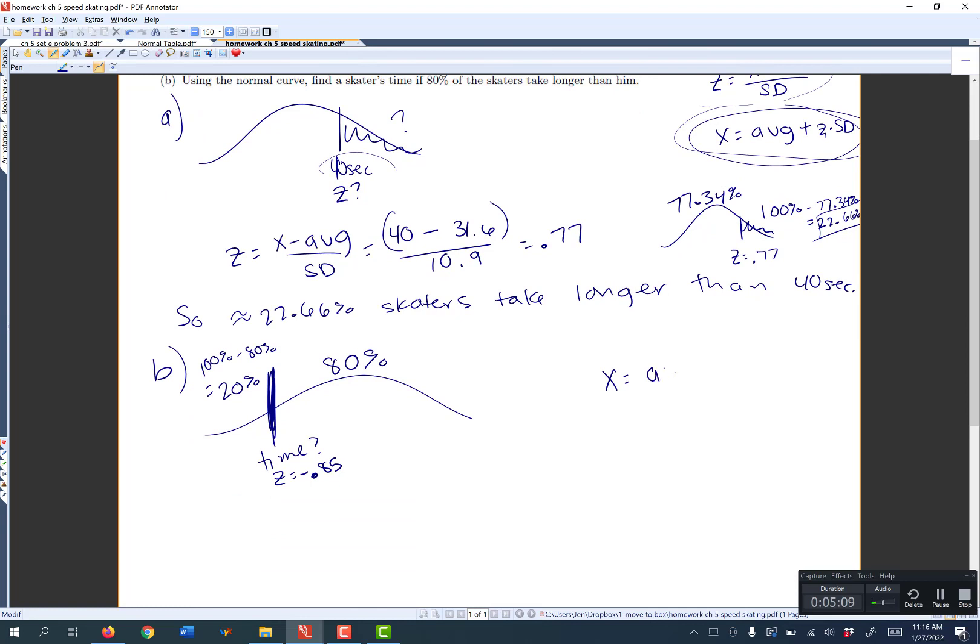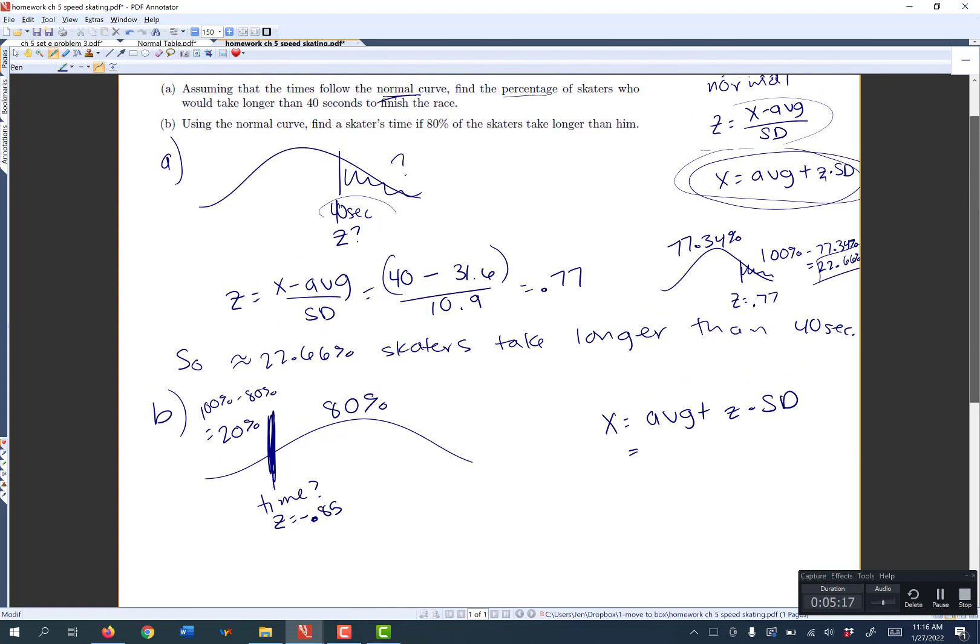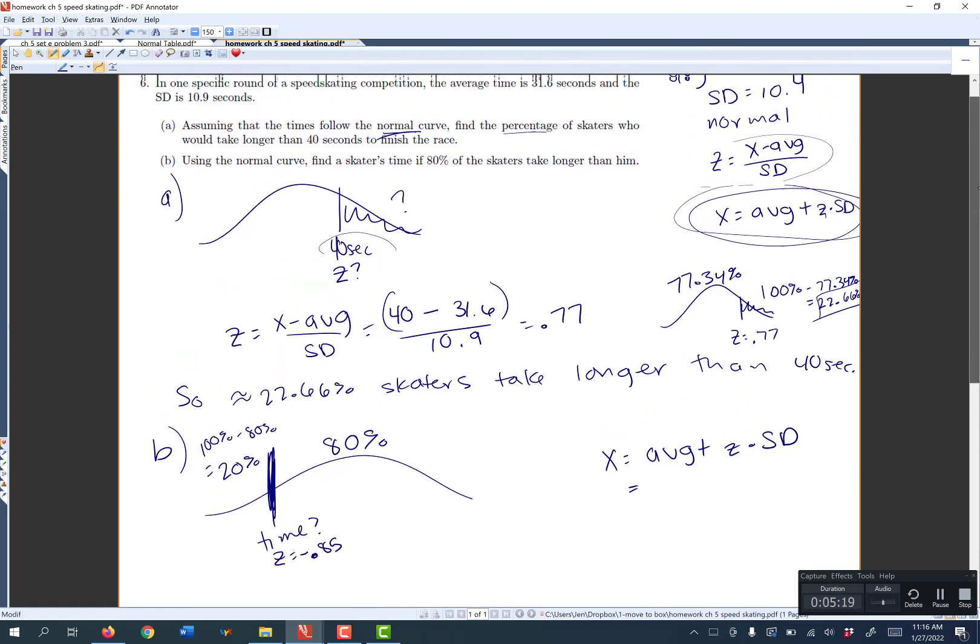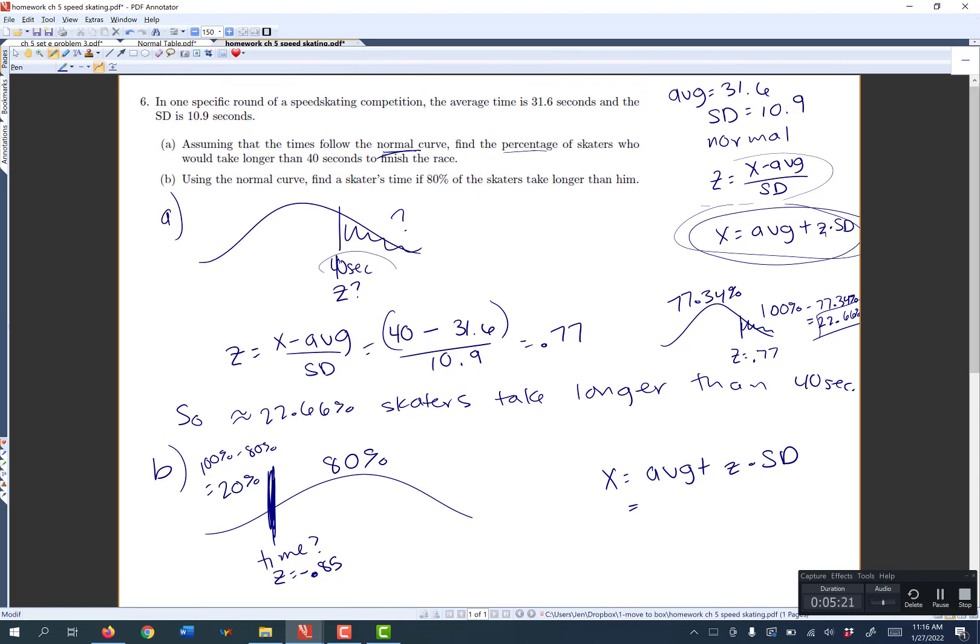So we'll say x is equal to my average plus z times my standard deviation. So my average was 31.6 plus z, which is negative 0.85, times my standard deviation of 10.9, which should give me 22.335 seconds.